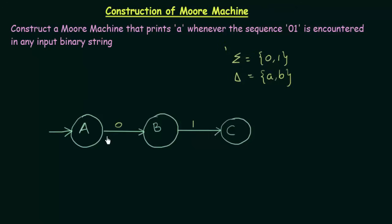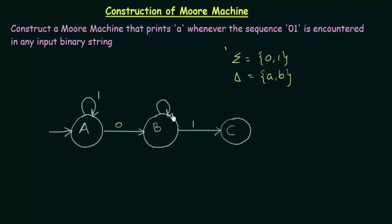This is not complete, because we did not mention where these states go on getting other inputs. If A gets input 1, let it stay in A itself, because I want to move to the next state only when I encounter the sequence 01. For B on getting input 0, I will keep it in B itself because I do not want to move further.